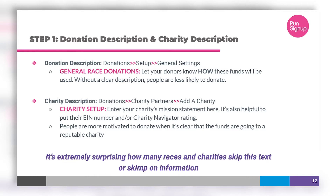The same goes for a charity description. If you're a race, you can add multiple charities during your registration process. When you add a charity to a race, you can give the charity access so they can customize their description, confirmation email, logo, and URL. Give them that control to customize all of that on their own, because your charity partners know what their mission is and how to phrase things to recruit donations.